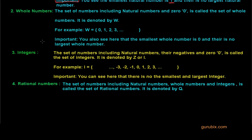Second, whole numbers. The set of numbers which includes natural numbers — that is, numbers which start from 1 and go to infinity — and 0 is called the set of whole numbers. It is denoted by capital W. For example, W is the set of numbers which start from 0 and goes to infinity. It is very important to know that the smallest whole number is 0 and there is no largest whole number.